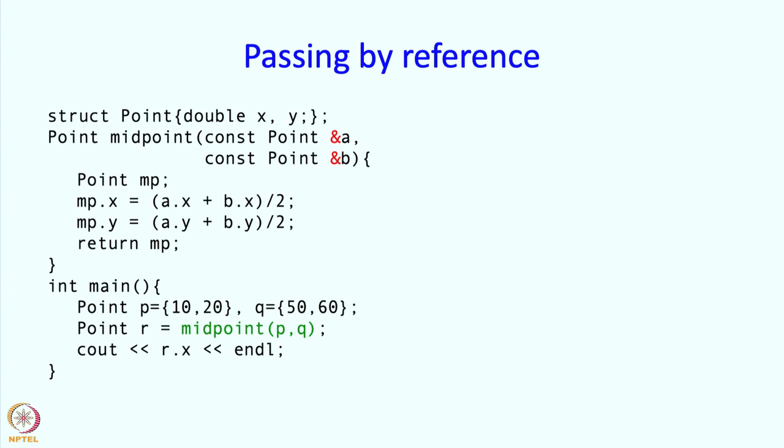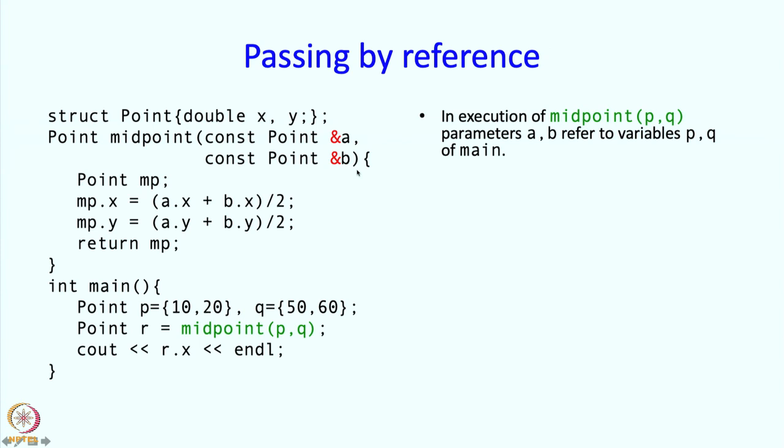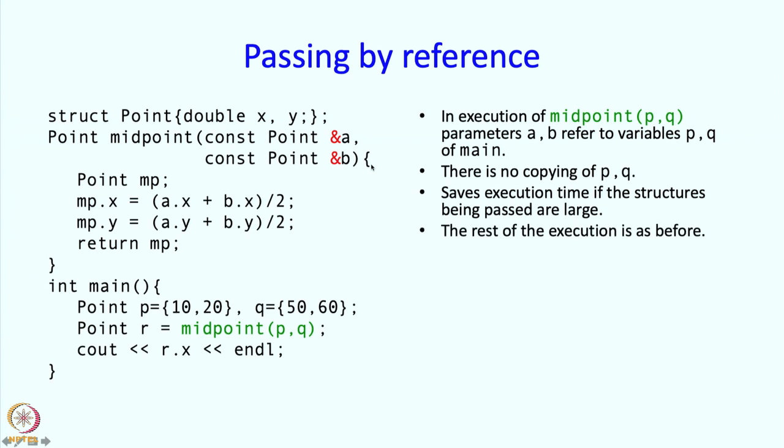We can pass by reference as well and in this case the code is really the same except that we have these two ampersands which indicate that a and b are passed by reference. In the execution of midpoint pq the parameters a, b will refer to variables p and q, nothing will be copied over. Now there is no copying of pq and this will save execution time if the structures being passed are large. And indeed if you are passing large structures, it is a good idea to pass them by reference.